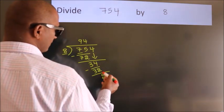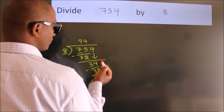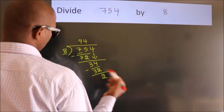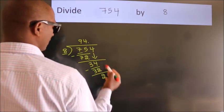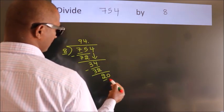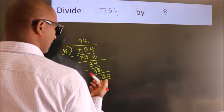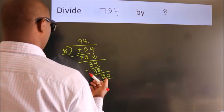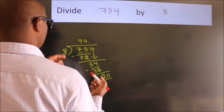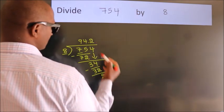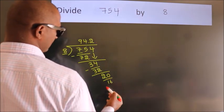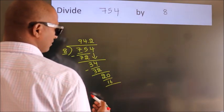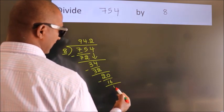After this, no more numbers to bring it down. So, what we do is we put dot take 0. So, 20. A number close to 20 in 8 table is 8 twos 16. Now, we subtract. We get 4.